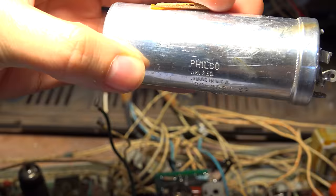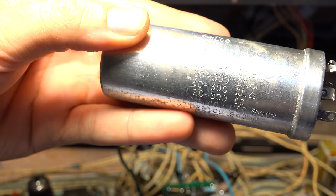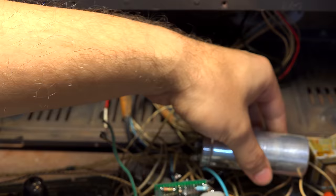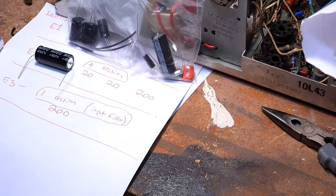Next up are the electrolytics, and they come in these big cans. The values are written on the side, but you really need to follow the schematic to know exactly where the wires go. There were about three or four electrolytic capacitors just crammed into one.